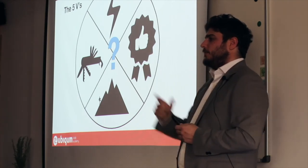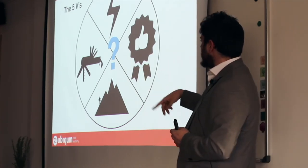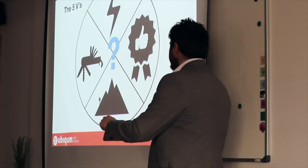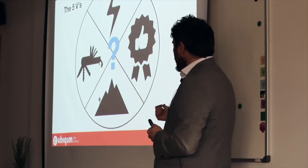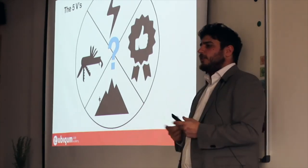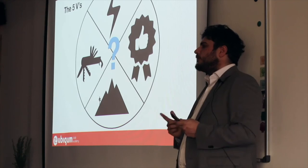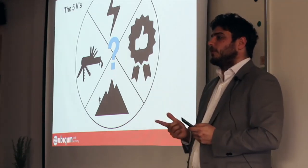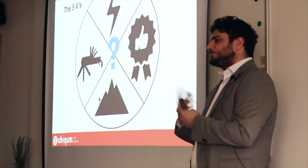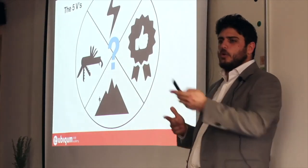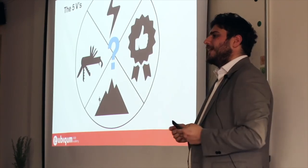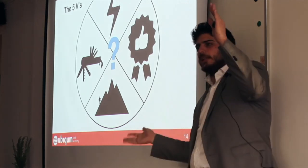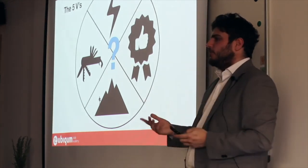And, these five V's are, actually, I was going to start clockwise, but I'm going to start from the bottom. So, volume, we have the guy here, which means that we can now process a big volume of data, which means that what you said at the beginning is now possible. You can store data, even data that you don't know what to do with, high volumes of data, and then start processing with the whole data at the same time. Now, it's possible.